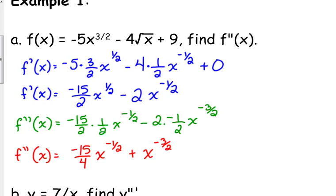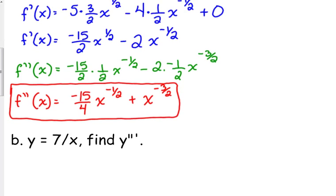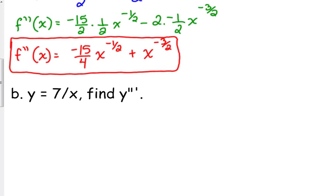That one did start as a square root, but I would just look at my answer choices and see whether they're in exponent form or radical form. Let's look at a rational example. y is equal to 7 over x, and we want to find y triple prime, so the third derivative. So y prime is equal to, and I'm going to do myself a favor, I'm just going to rewrite 7 over x as 7x to the negative 1.